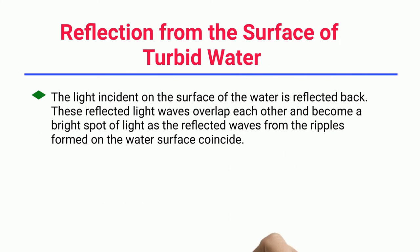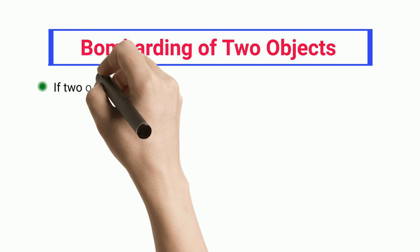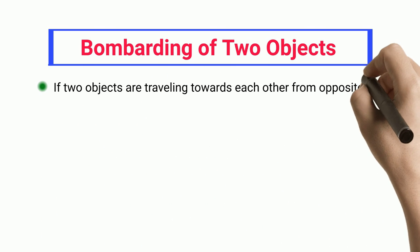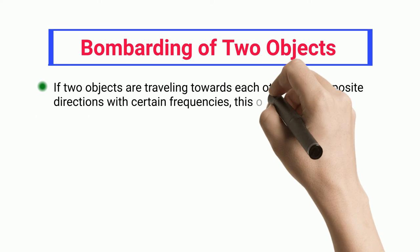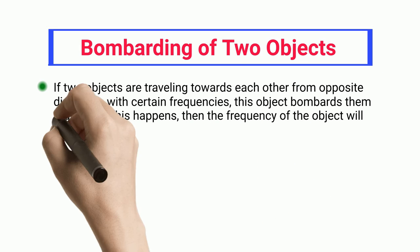Bombarding of two objects: If two objects are traveling towards each other from opposite directions with certain frequencies, these objects bombard together. If this happens, then the frequency of the object will either become zero or produce the vibrational frequency.